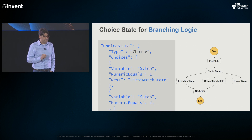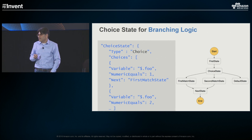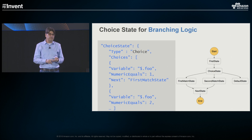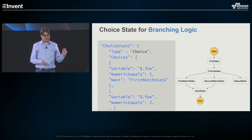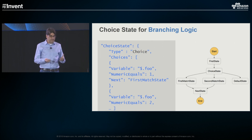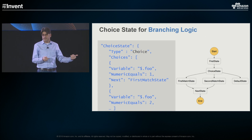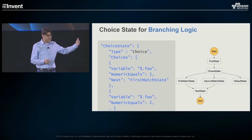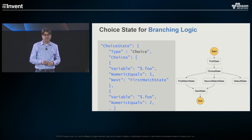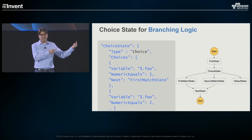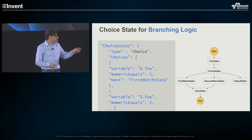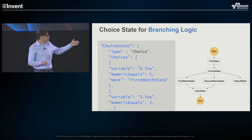Choice states give you branching logic. You specify type 'choice' and then you have comparators. The comparators can be strings, numerics, booleans, or timestamps. You have the full range: greater than, less than, equal to, less than or equal to, greater than or equal to. The variable calls the path of your JSON input — the key of a key-value pair, in this case the key is 'foo'. Each comparison says: is this comparison true? If so, go to that state. If not, go to the next comparison. The first comparator says: does the numeric of foo equal one? If yes, go to the first match state. If no, go to the next comparator. Keep working through until you've exhausted all comparisons. If all fail, you can specify a default state — if none of them match, go to this state because there's a problem in the execution. That's what you see in the state machine on the right.